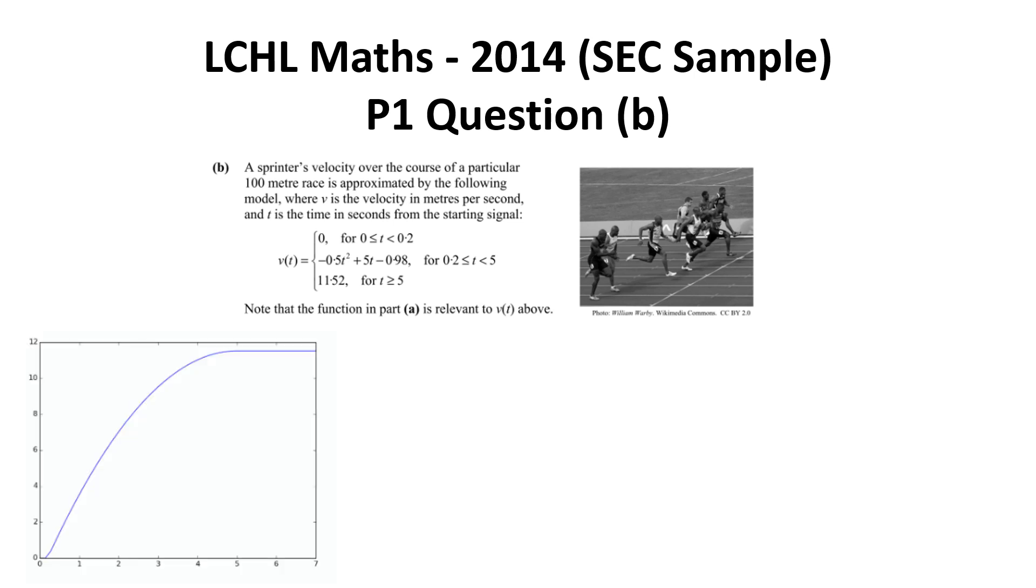This is what our graph looks like. For the first 0.2 seconds there's no movement - this is like the reaction to the starter gun, that little bit of delay in the reaction. The next section is nearly like the first part of a negative quadratic - this is the acceleration section, but the acceleration is decreasing over time until it flattens out, which gives us a constant speed.